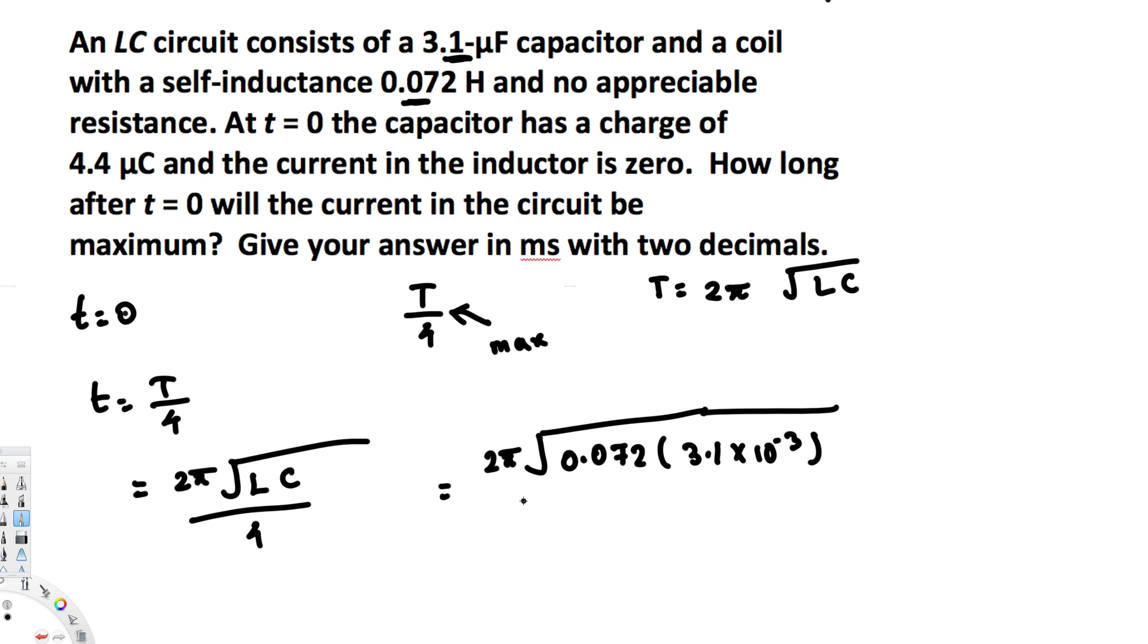And that's it, divided by 4. If you calculate this, you will get 0.7417 × 10^-3 seconds. But in the question they asked to give it in milliseconds with two decimal places.